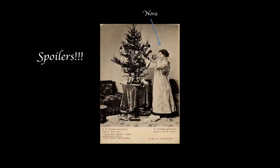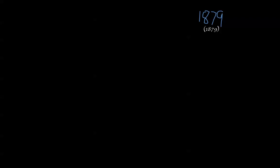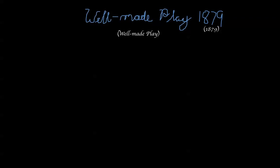Okay, so for the rest of you: Nora leaves at the end. That's crazy! And that's really why this play is so crazy, and to understand why that's so crazy, we need to go back to 1879 and take a look at what was popular then — the well-made play.